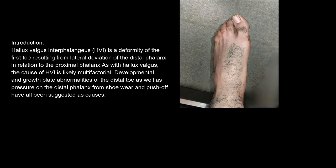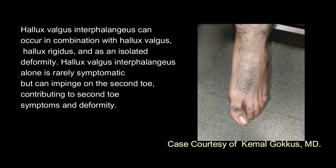Introduction. Hallux valgus interphalangeus (HVI) is a deformity of the first toe resulting from lateral deviation of the distal phalanx in relation to the proximal phalanx. As with hallux valgus, the cause of HVI is likely multifactorial. Developmental and growth plate abnormalities of the distal toe, as well as pressure on the distal phalanx from shoe wear and push-off, have all been suggested as causes. HVI can occur in combination with hallux valgus, hallux rigidus, and as an isolated deformity.